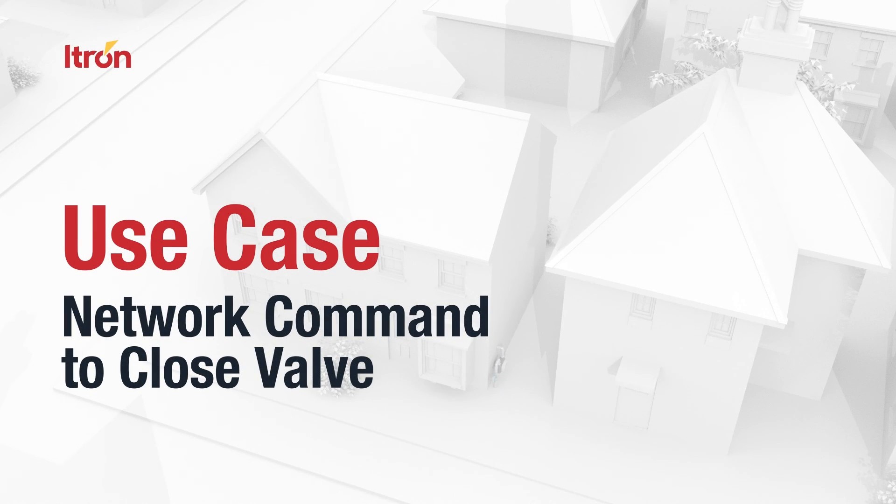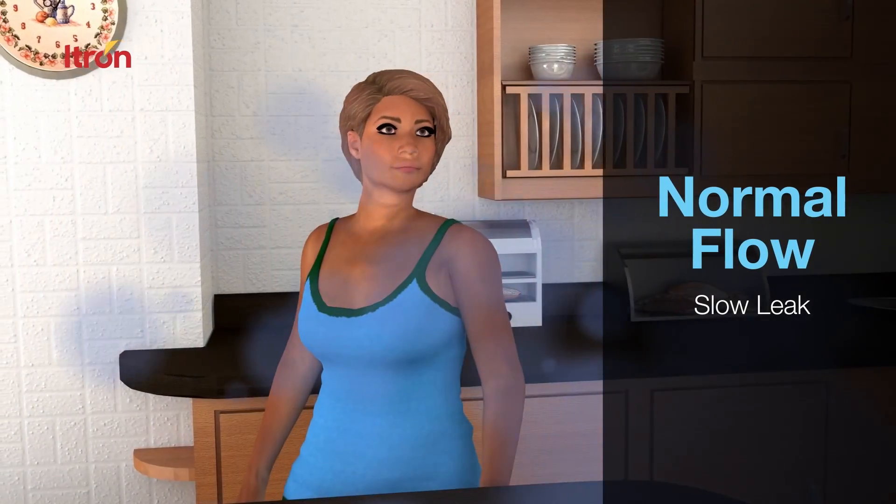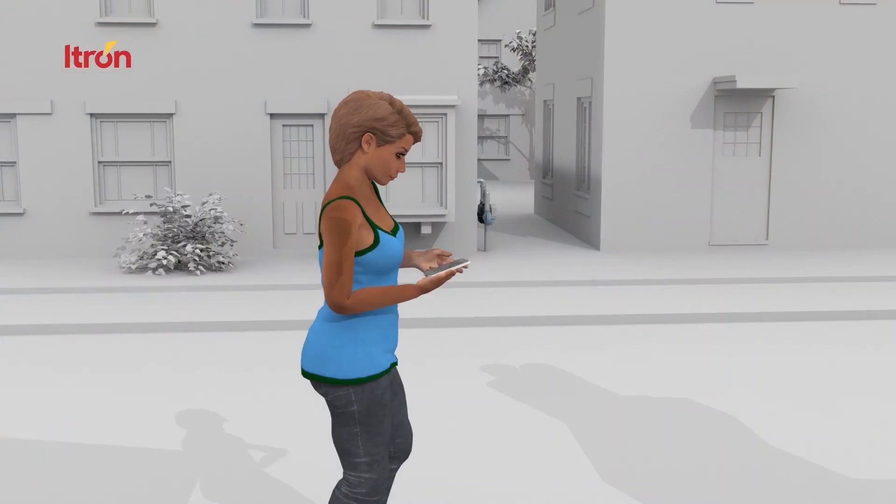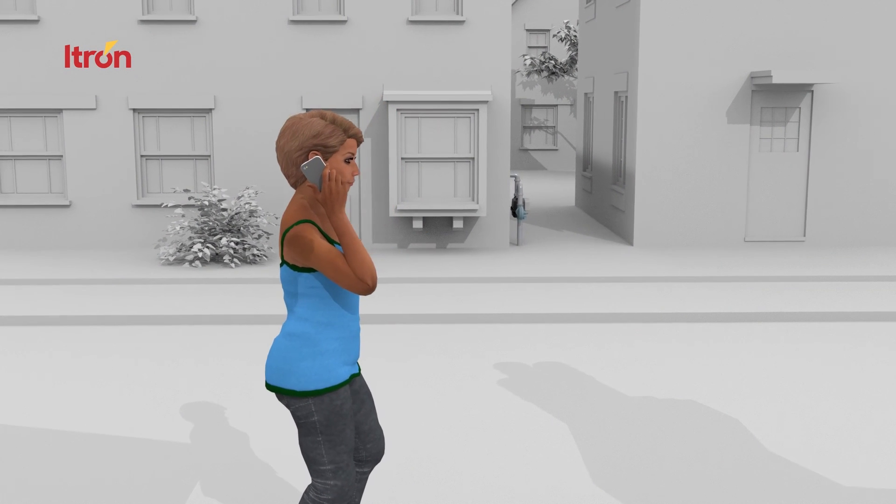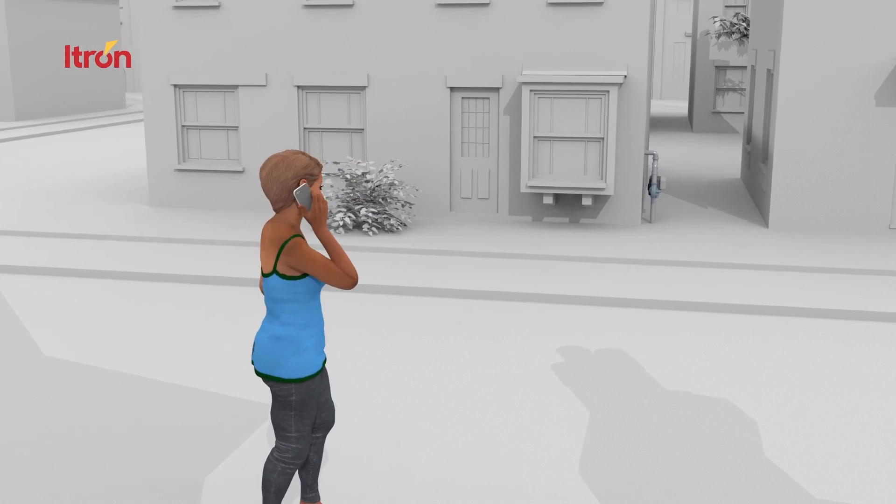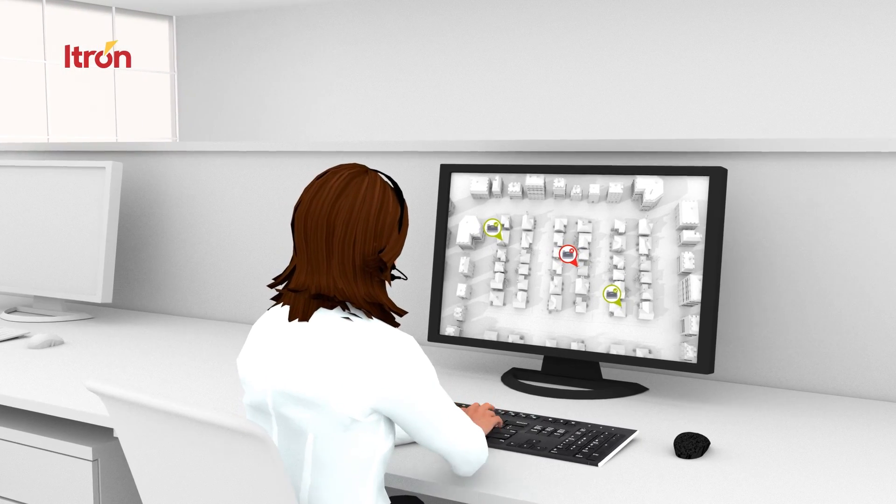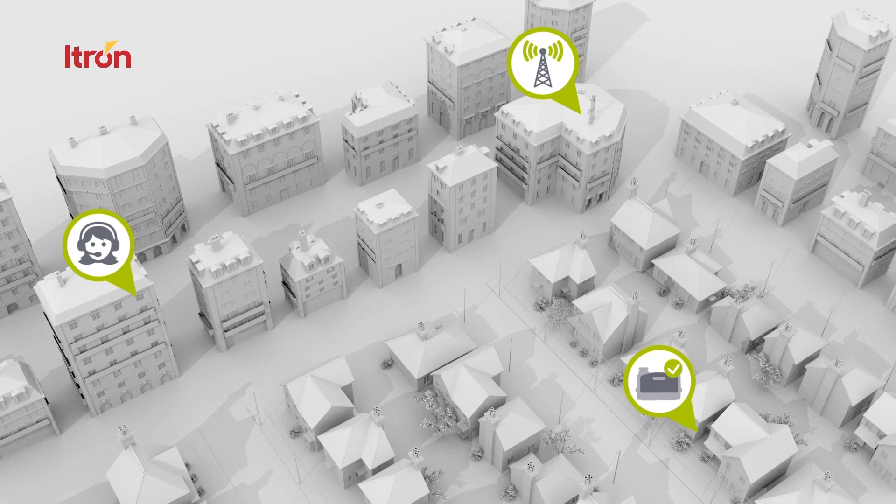This use case demonstrates how a utility can remotely shut off the gas. A customer smells gas inside the home due to a small leak. The customer contacts the utility explaining the gas smell. Utilizing the network, the utility operator remotely sends a command to shut the valve, stopping the flow of gas.